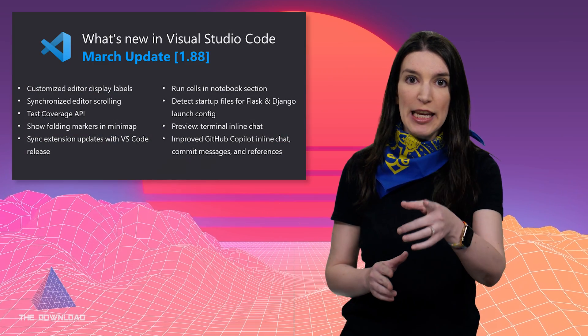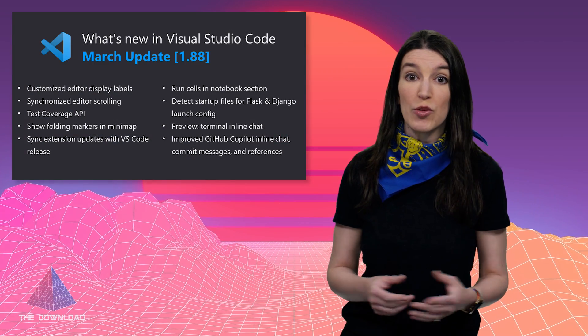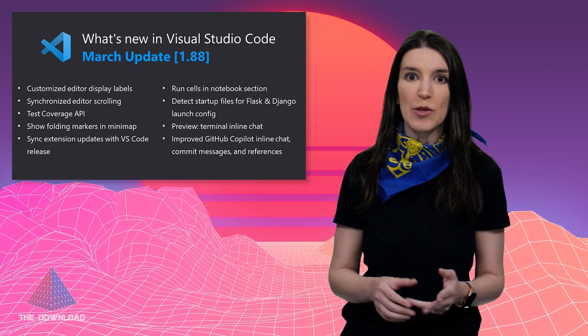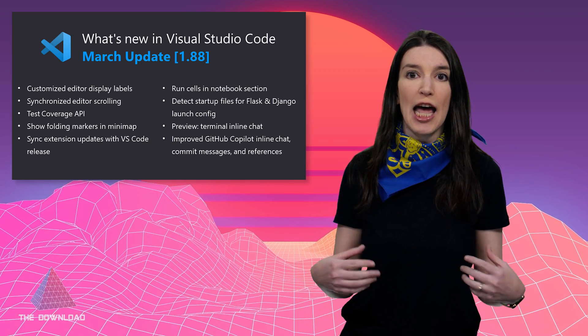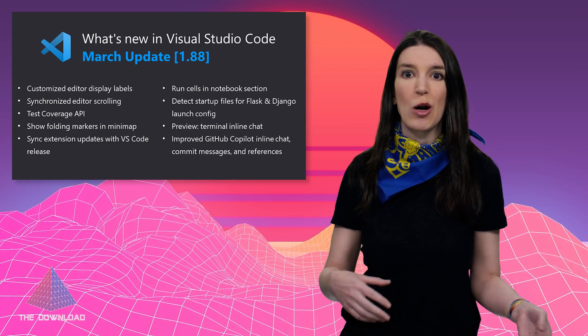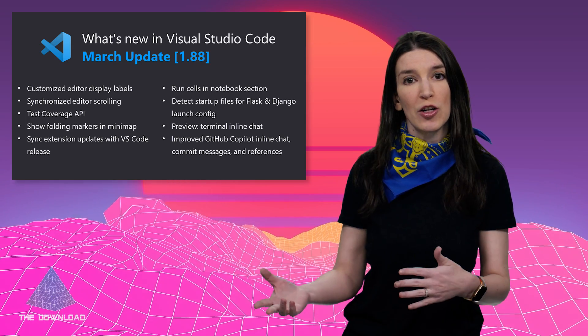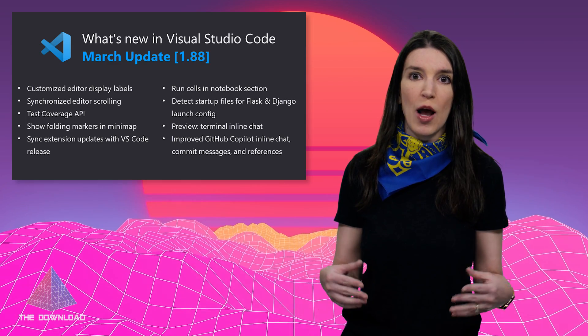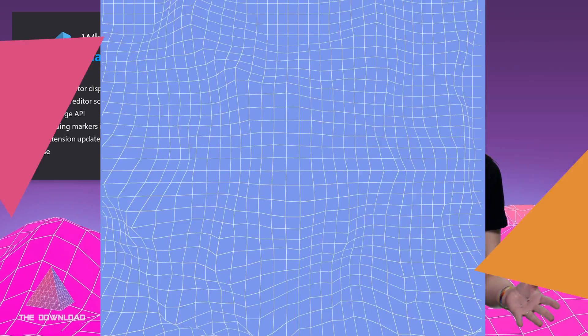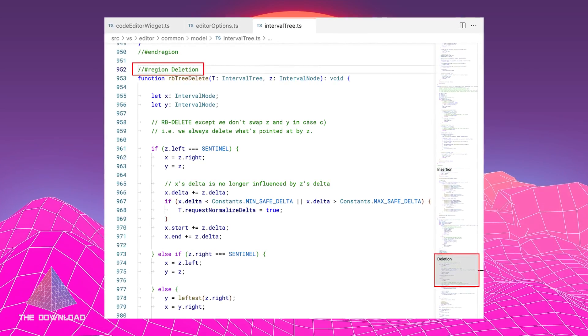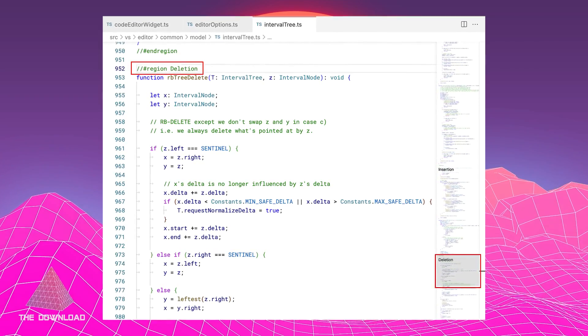That's going to be out in May. Speaking of Visual Studio, the latest Visual Studio Code update is out now. This release brings some notable updates to how extension updates happen — you can now restart and update extensions without having to reload your editor, which is great. There's also now folding markers in the mini-map. So if you're a monster who keeps mini-map on — I'm kidding, kind of — that's great. I've got a full link to the release notes in the show notes in the description.